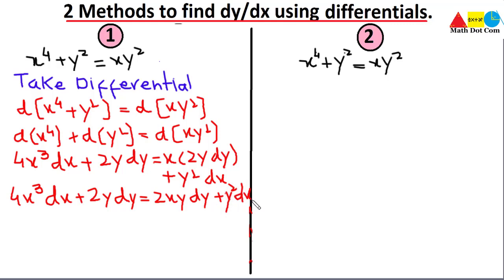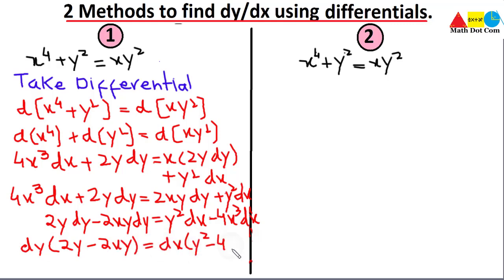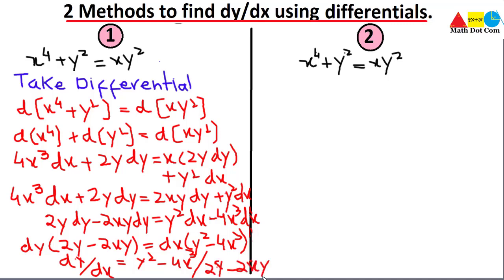Now we combine dy terms on one side and dx terms on the other: 2y dy − 2xy dy = y² dx − 4x³ dx. Taking dy as common: dy(2y − 2xy) = dx(y² − 4x³). Therefore dy/dx = (y² − 4x³) / (2y − 2xy). This is the answer for dy/dx using the direct differential method.